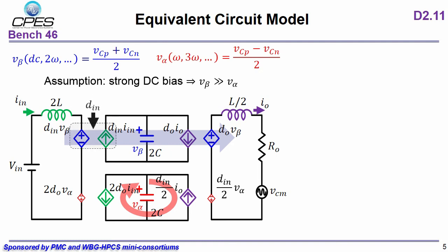Now we can look at the control. D-in, the duty cycle, controls the input current and the V-beta, the capacitor voltage. However, when we're regulating input current, we at the same time generate the circulating power. Likewise, D-O regulates the output current. And when we do the output current regulation, we also generate the circulating current at the same time.